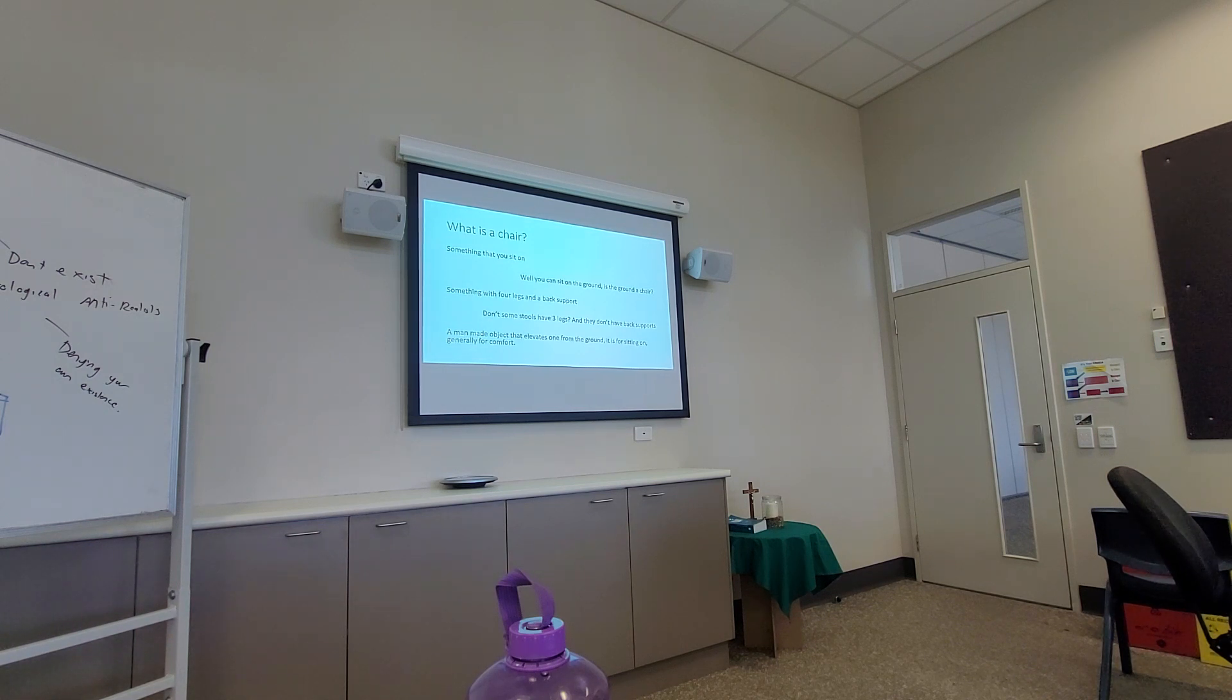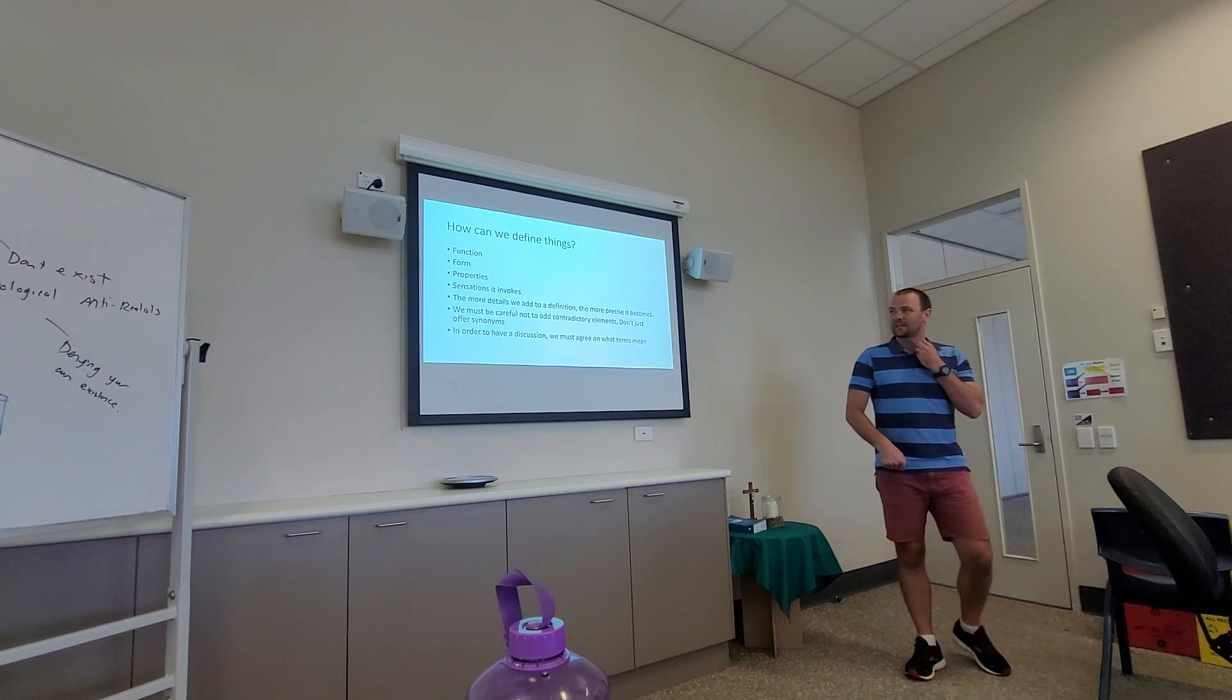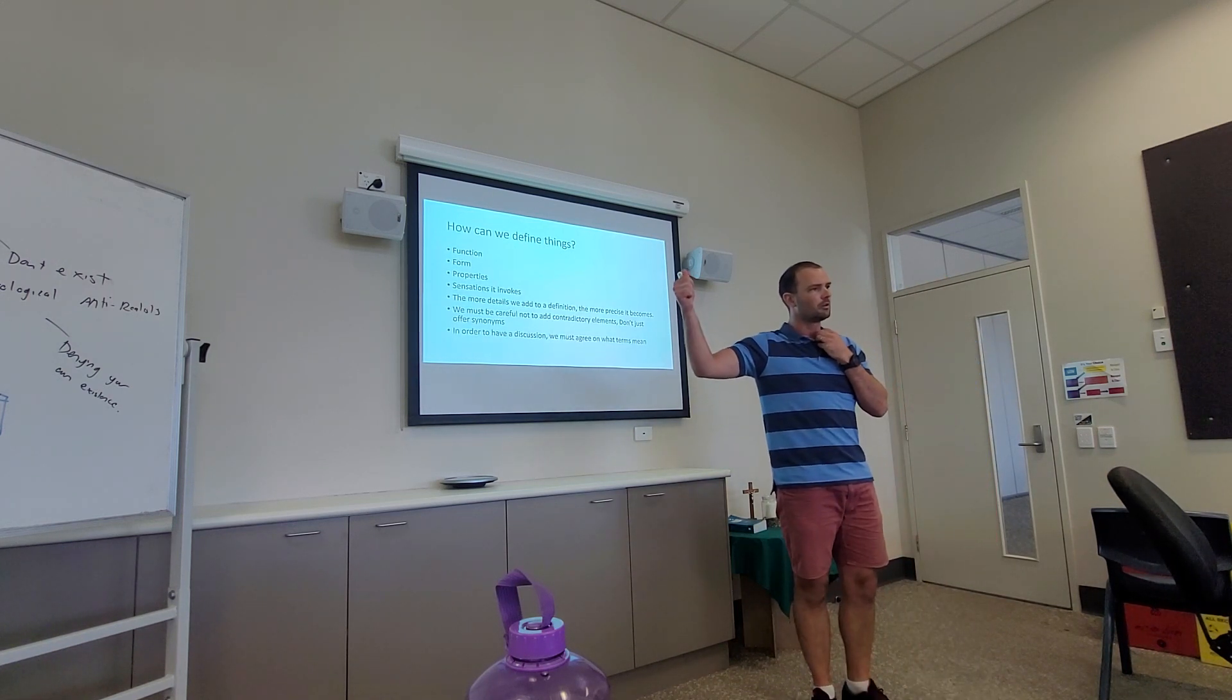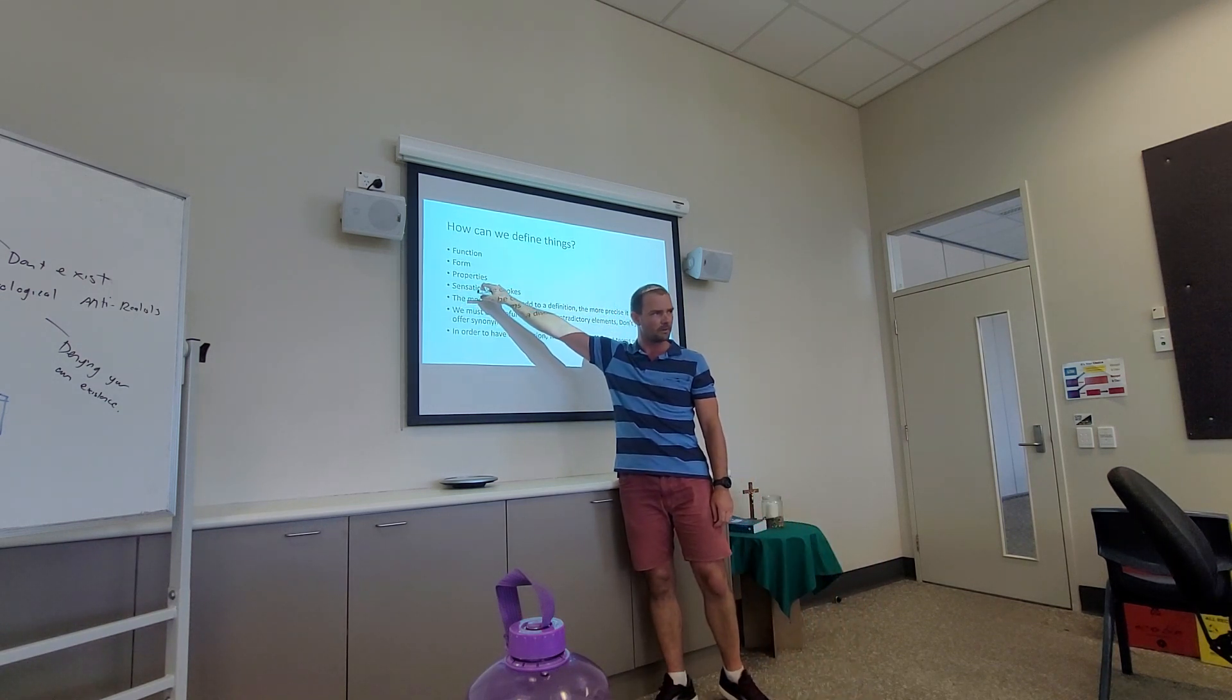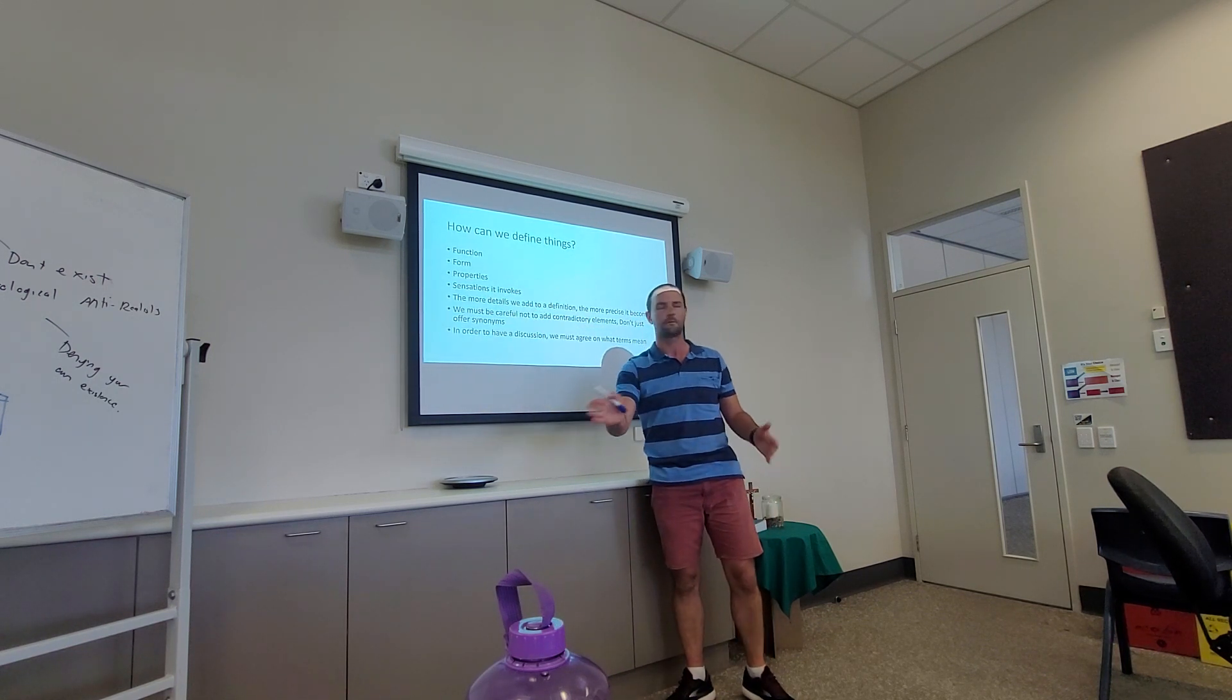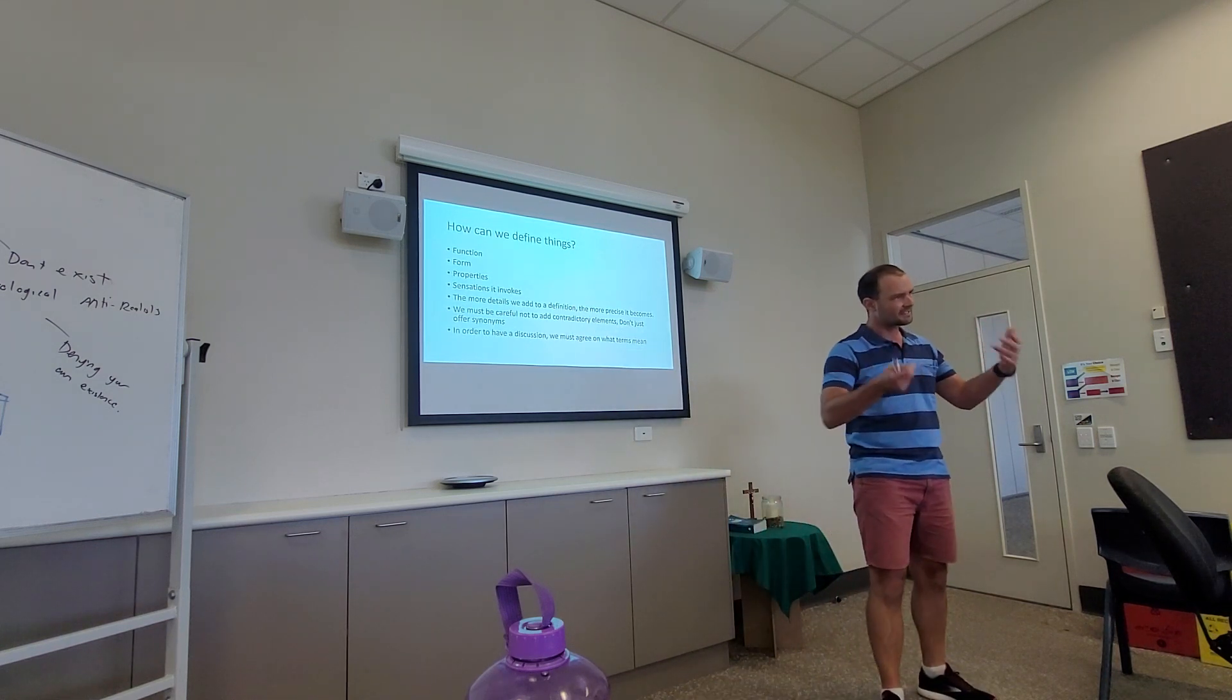So the couch—a couch. It's a type of chair, isn't it? So these are the ways we can define things. We can define them in terms of their function. That's inductive. Function is what does it do? We can define it in terms of its form. That's the shape that it has. Its properties. What it looks like. We can define it in terms of the sensation it invokes. Oh, it feels really soft when you touch it.